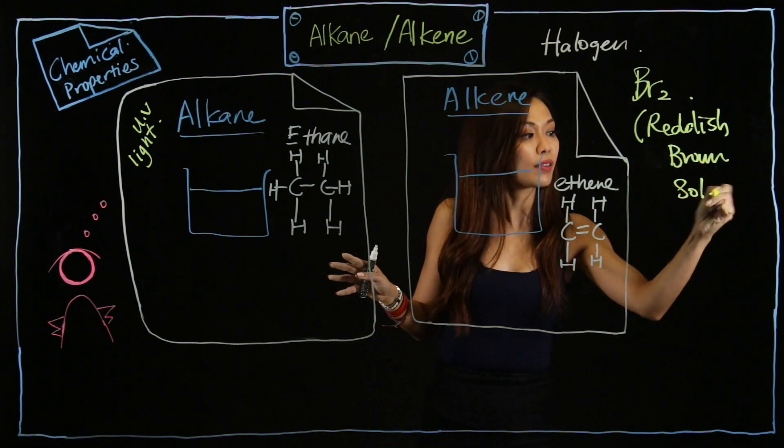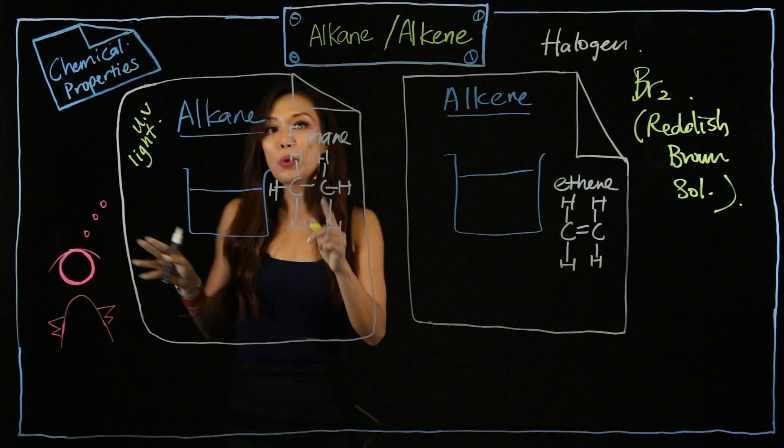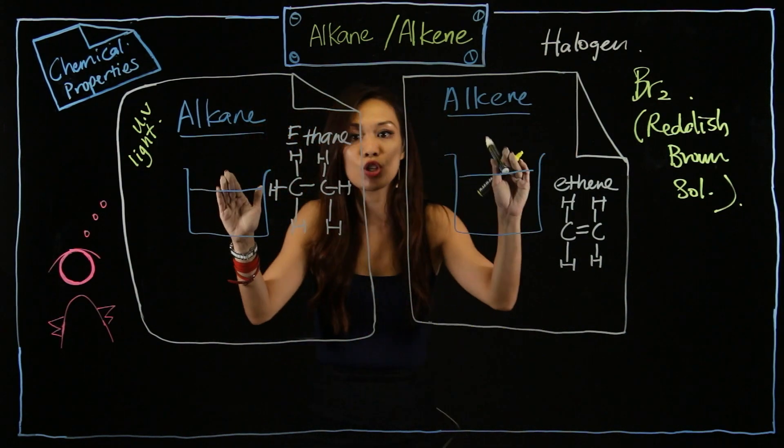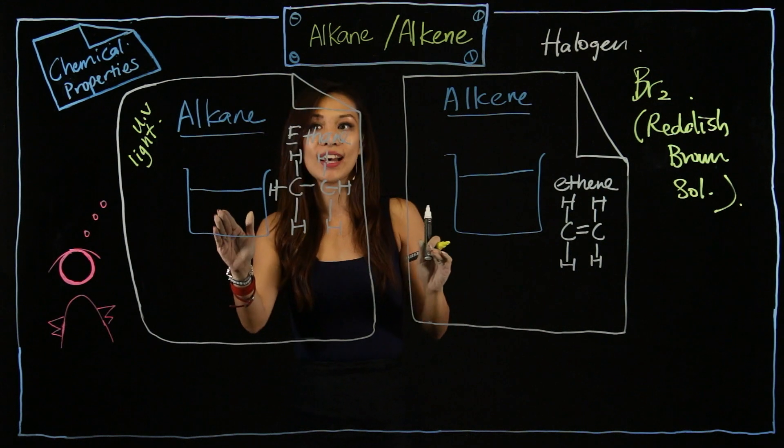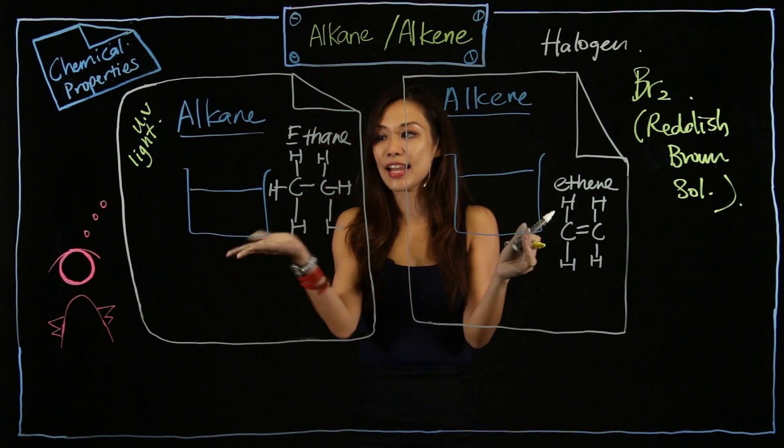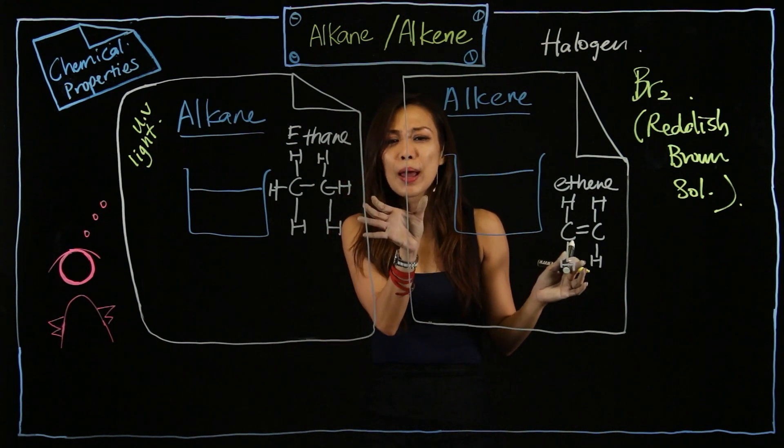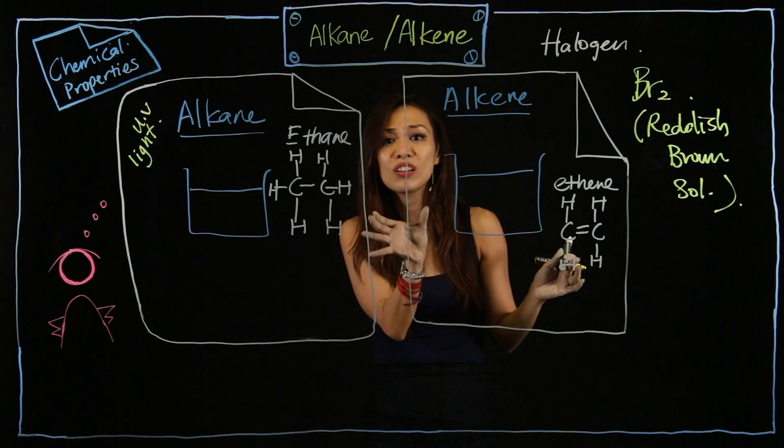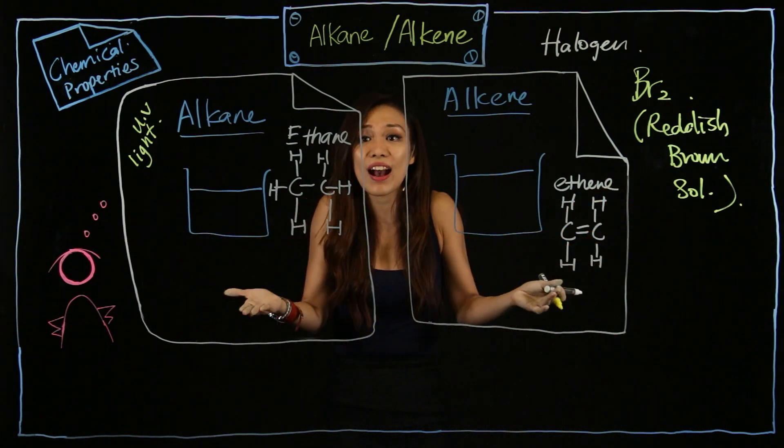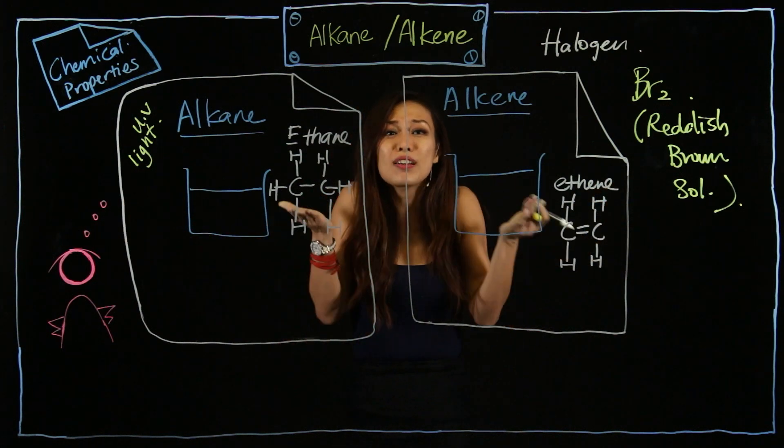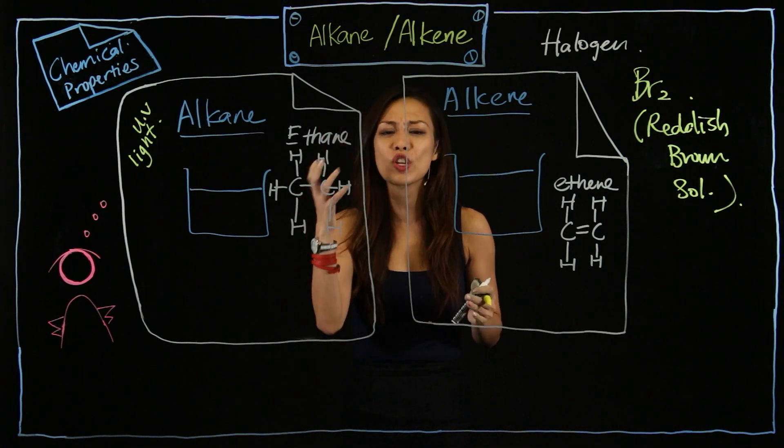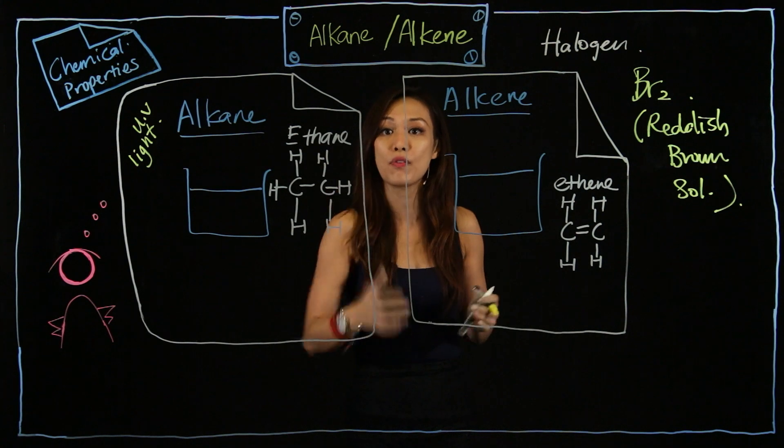The moment I add bromine into both solutions - for example, this is an alkane solution and this is an alkene solution. Now, of course, in real life they just look like plain pure distilled water. If I didn't tell you, you don't even know that they are actually alkane and alkene because they look exactly just like water.